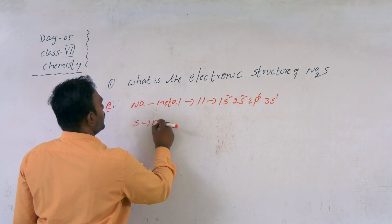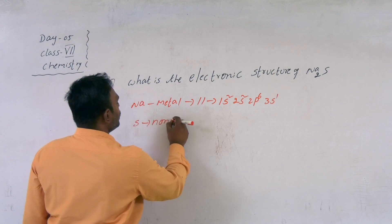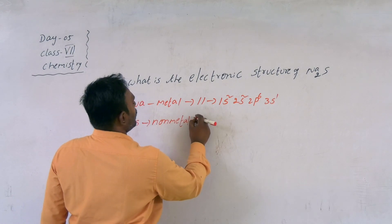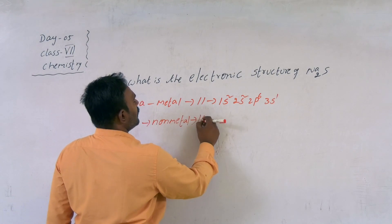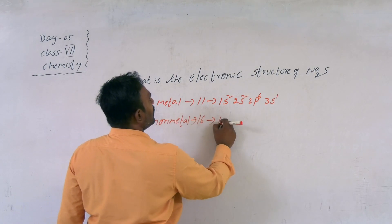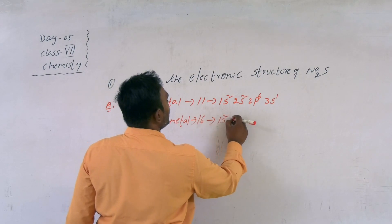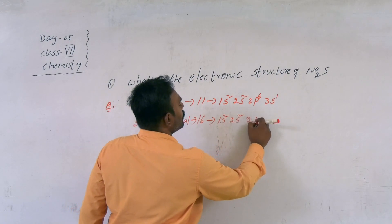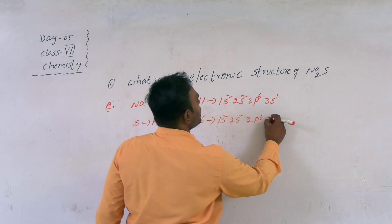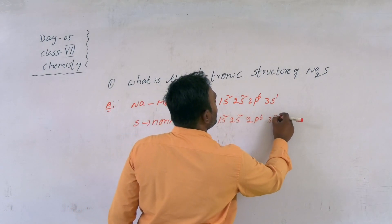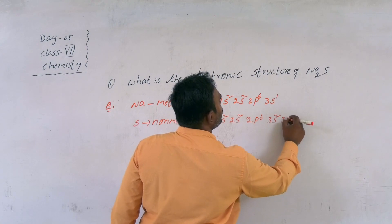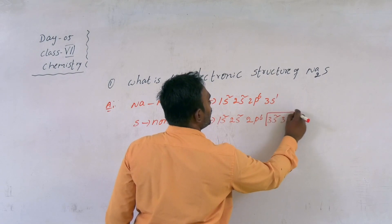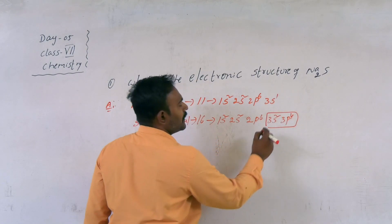Sulfur is a non-metal with atomic number 16. Its configuration is 1s2, 2s2, 2p6, 3s2, 3p4.